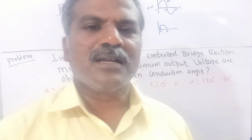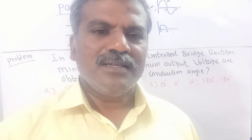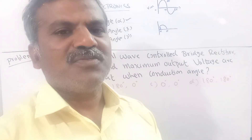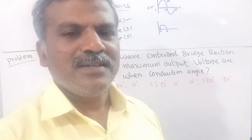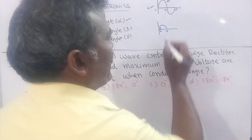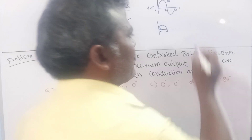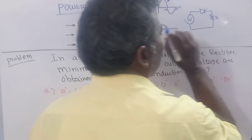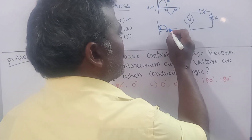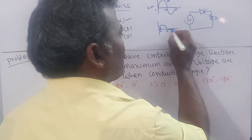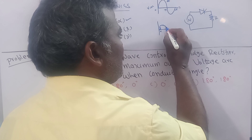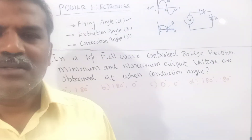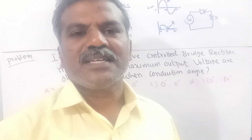When the thyristor turns on, that instant alpha angle is the firing angle. What is extinction angle? The turn-off state — after half cycle the thyristor turns off. For a single phase half-wave controlled rectifier with resistive load, at some degree the thyristor goes to off state, that is the conduction state turning off. That turn-off angle is the extinction angle.